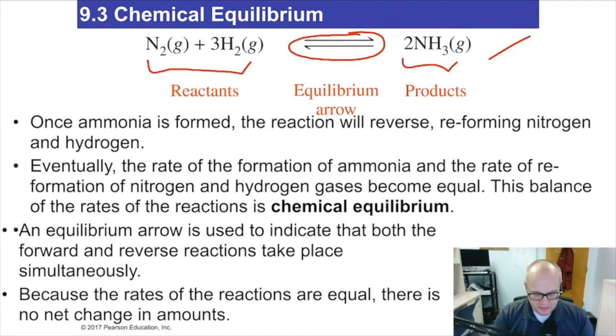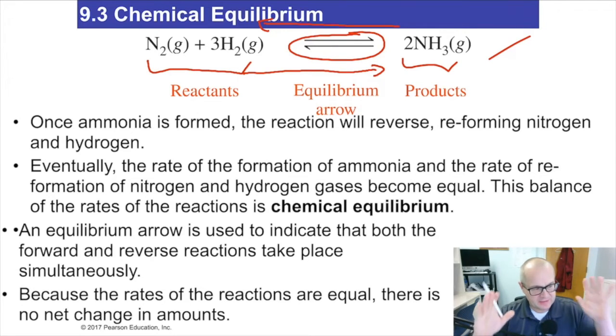So as products get formed going to the right, they go back to the left at the same rate. If I have one product molecule being made, I have a bunch of starting materials going back. It's at the same time at the same rate.